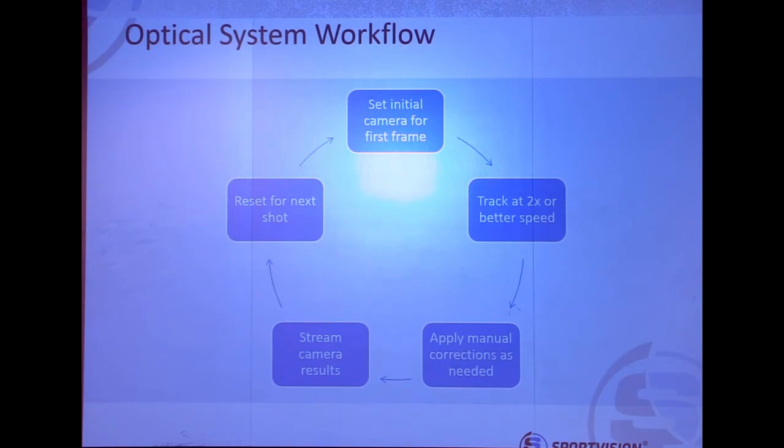During that freeze frame, the operator is dragging our virtual model into place so it matches all the right features — matching the right hash marks and yard lines with the real ones. Once that model is set, you basically hit the tracking button. Now we've stopped time and we want to be ready for the first replay, which means maybe within five to ten seconds after the play is done, we need to have this finished clip back to ESPN. So we already stopped time and now we're already behind time, and we have to go faster than real time.